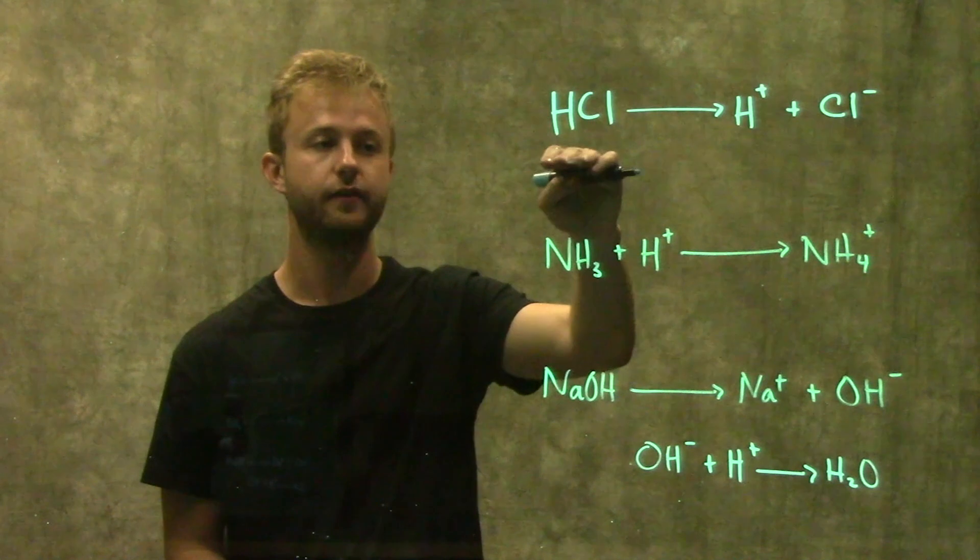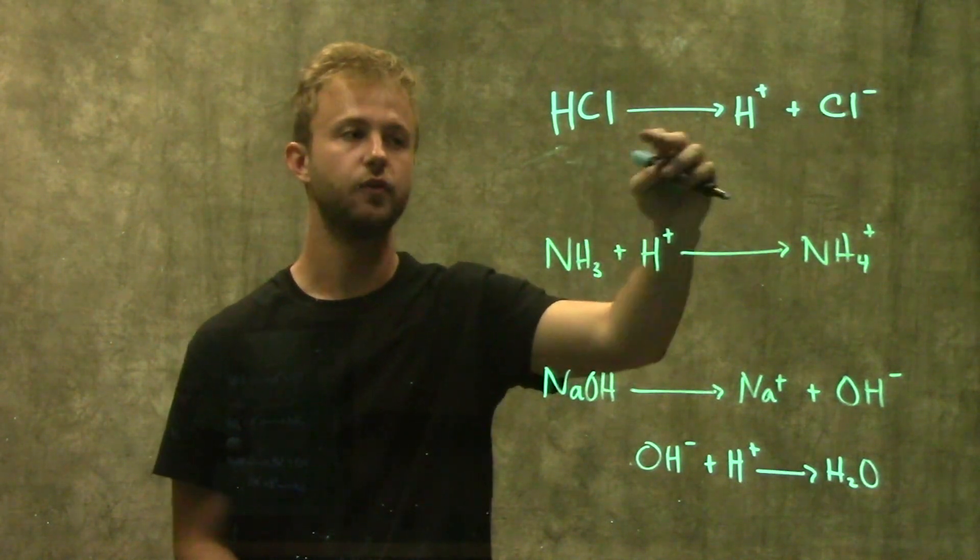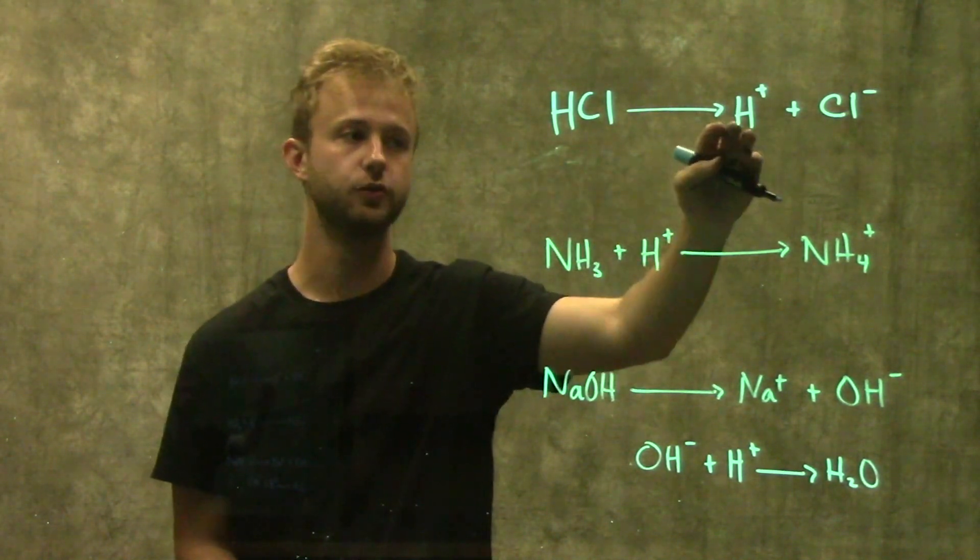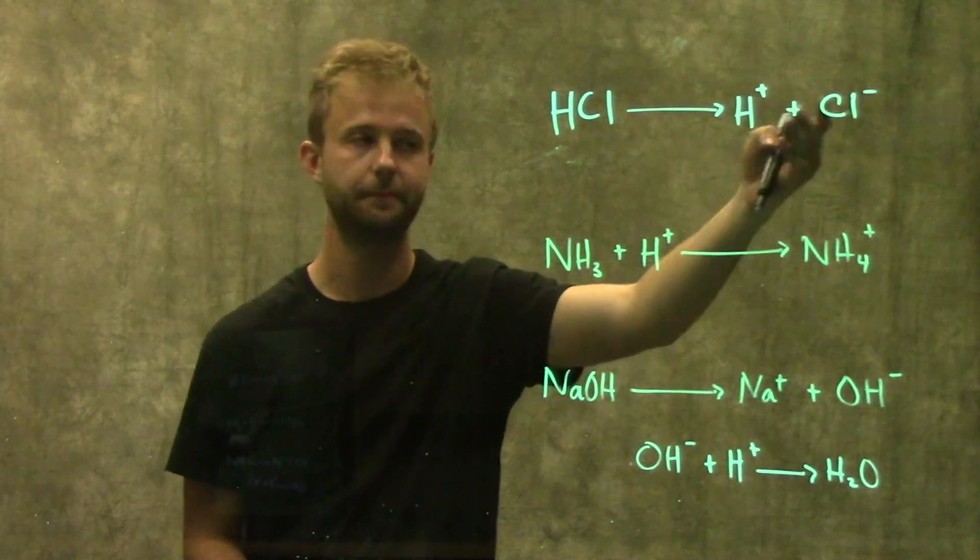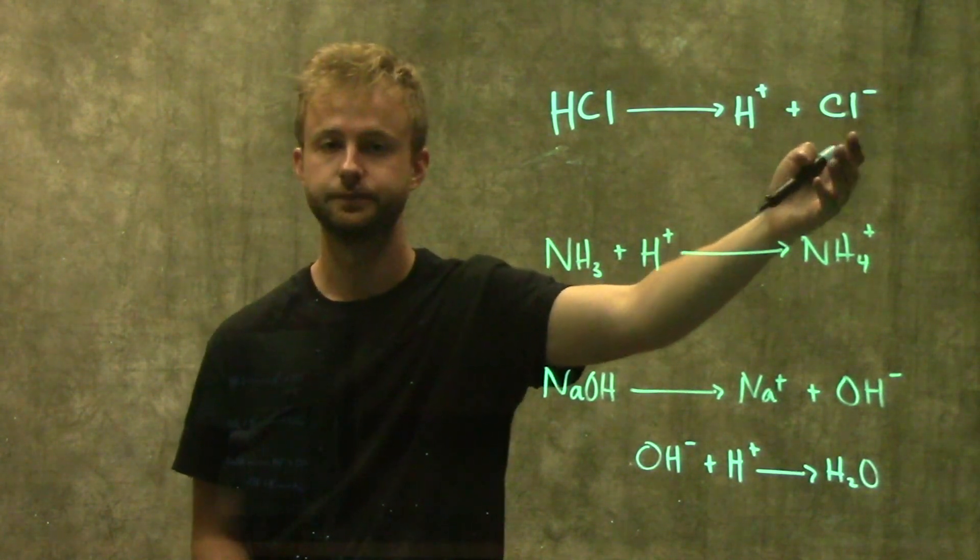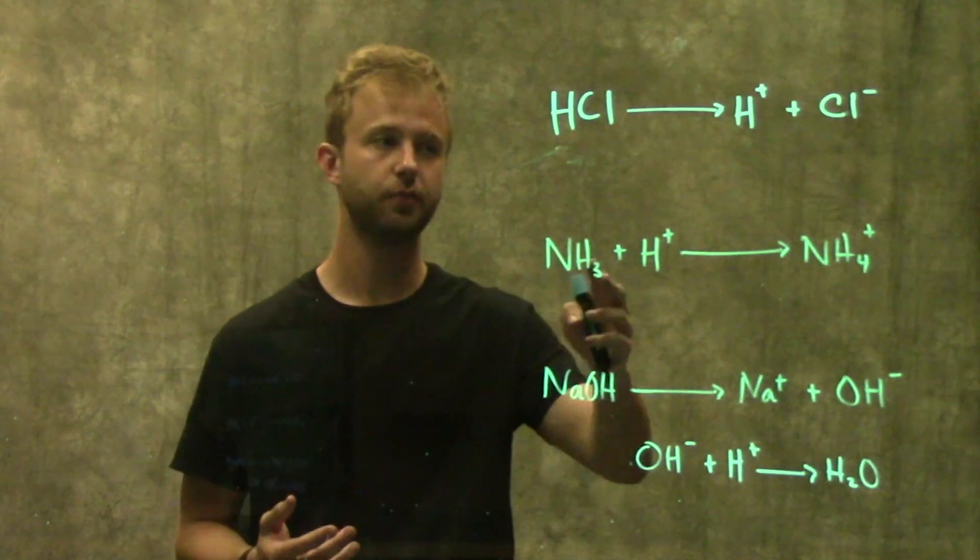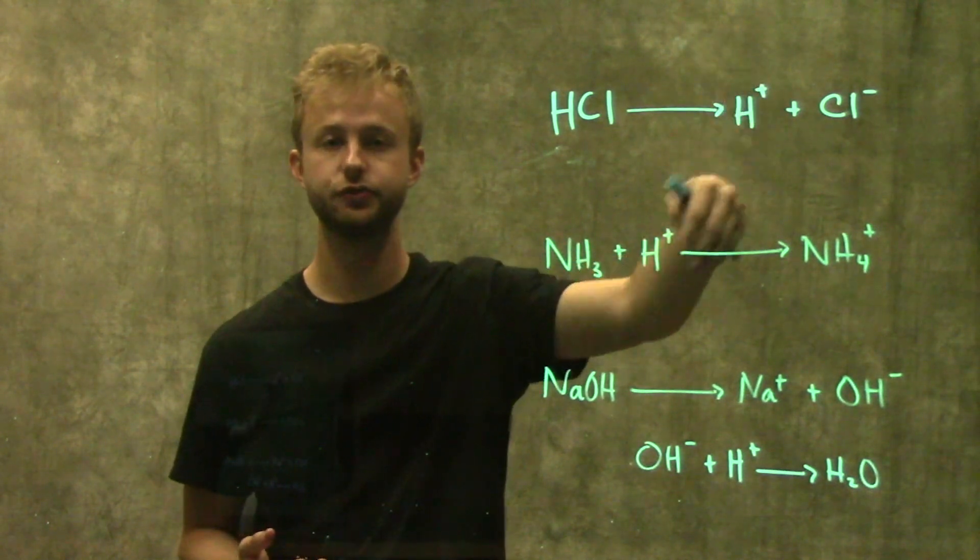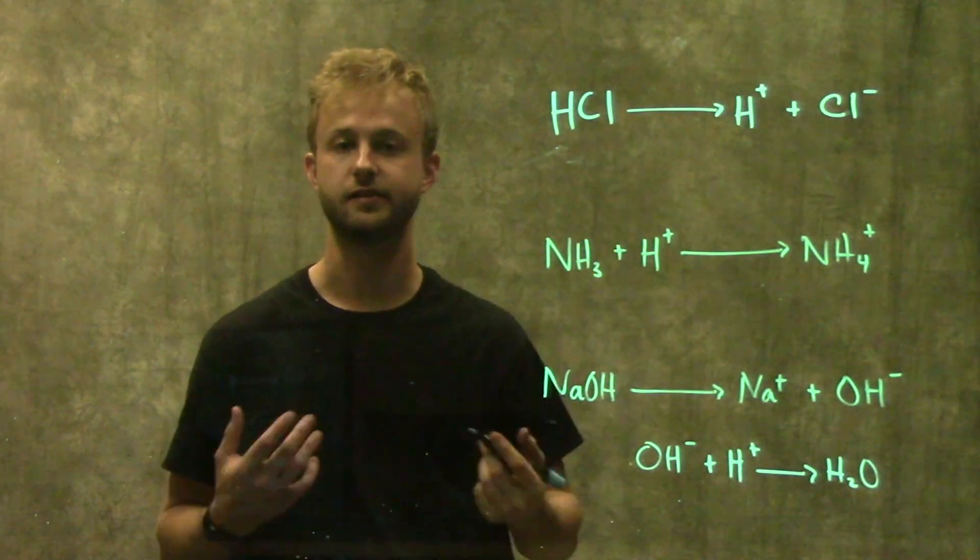For example, when we have hydrochloric acid and put that in water, it's going to split apart into a proton, which is a hydrogen atom, and a chlorine ion. Because we're splitting it apart and adding more hydrogen to the solution, that's why this is acting as an acid.